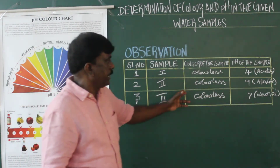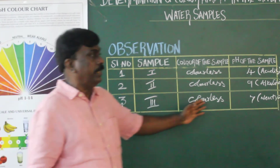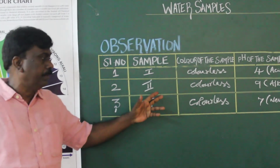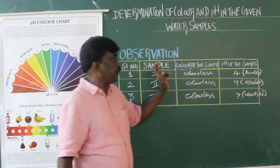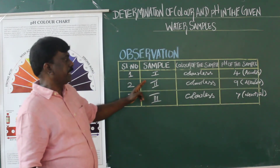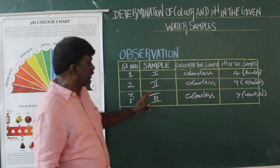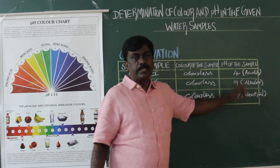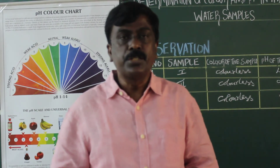With these three results we are able to identify and conclude that sample 3 is the only one fit for consumption. Now we write the inference: from sample letter 1 the pH value is 4, showing acidic. Sample letter 2 shows value 9, which is alkaline. The third sample gives pH value 7, which is neutral. So with this we have identified the solution which can be consumed. Thank you.